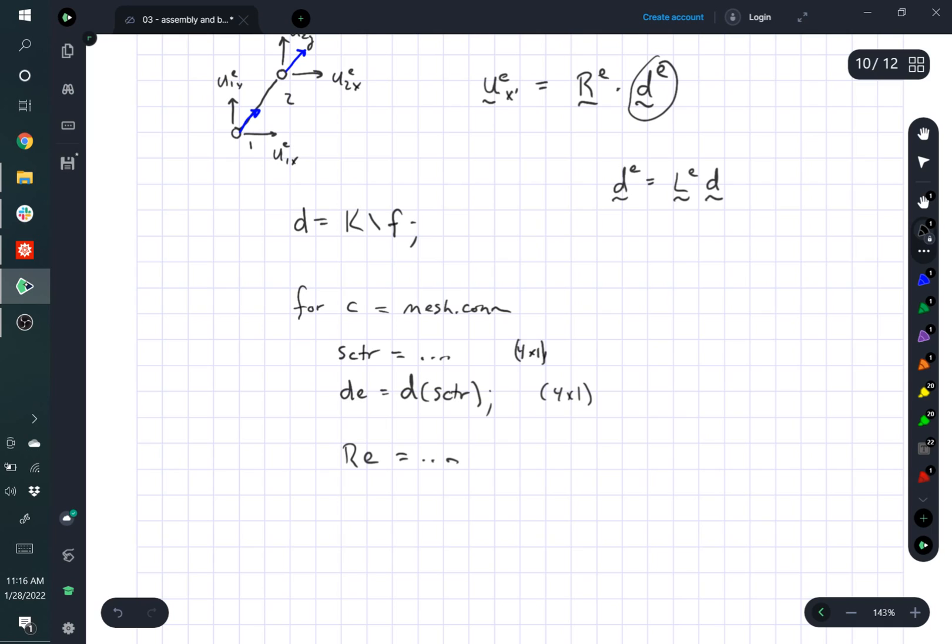Because you're gathering the four components of displacements. Then compute R. Again, you've already done this. Don't reuse it. You have to recompute it because it differs for each element.